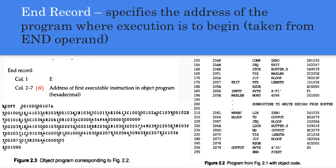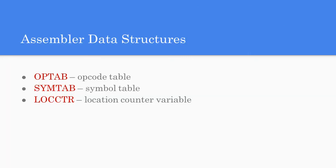Now we move to the last topic: assembler data structures. These data structures are used by the assembler to accomplish the tasks we have seen. There are three data structures: OPTAB (opcode table), SYMTAB (symbol table), and LOCCTR (location counter variable).